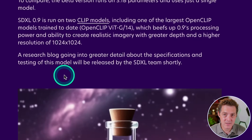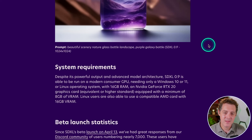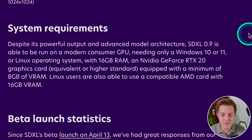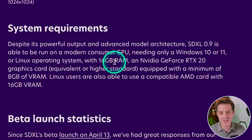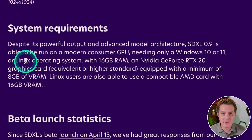They're going to be releasing a blog post about all their advancements soon. Here's another image — absolutely stunning galaxies in the background, a little galaxy in a bottle, really beautiful. Now here are the system requirements: SDXL 0.9 runs on a modern consumer GPU. You need Windows 10 or 11 or Linux, 16 gigabytes of RAM — not VRAM, just regular RAM, which most modern computers have — an NVIDIA GeForce RTX 20 series graphics card, and 8 gigabytes of VRAM. Very doable, and really a minimum requirement for any modern video game.